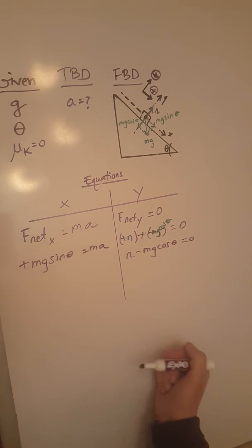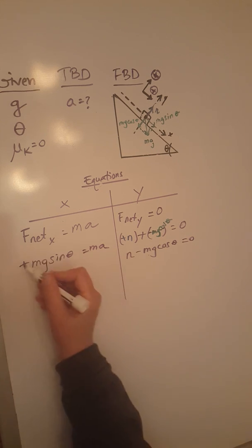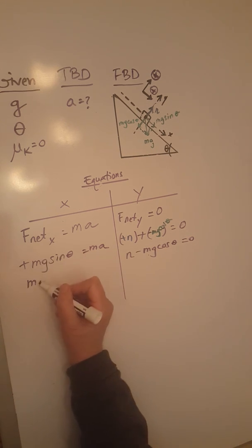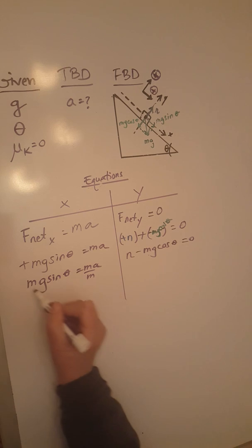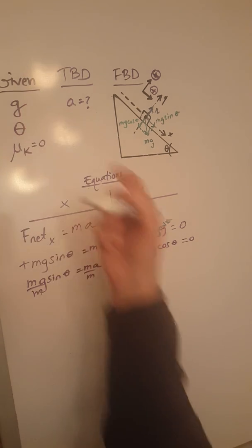Looking at this equation and simplifying it, we don't really need a positive anymore here. We can just rewrite this mg sine theta equals m a. Divide both sides by the mass that wasn't given, so we have to get rid of it.